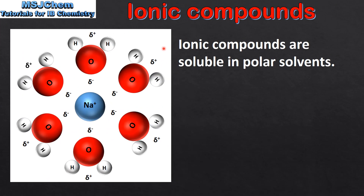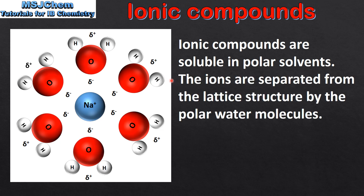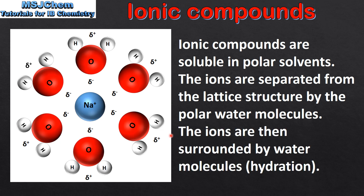Next we look at the solubility of ionic compounds. Ionic compounds are soluble in polar solvents, such as water. The ions are separated from the lattice structure by the polar water molecules, and then surrounded by water molecules — which is called hydration.